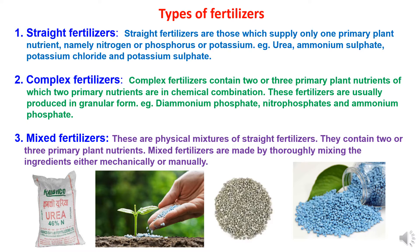Straight fertilizers are those fertilizers which supply only one primary plant nutrient — it may be nitrogen, phosphorus, or potassium. Examples are urea, which supplies nitrogen; ammonium sulfate, which supplies nitrogen; potassium chloride, also known as muriate of potash, which supplies potash; and potassium sulfate, also providing potash.